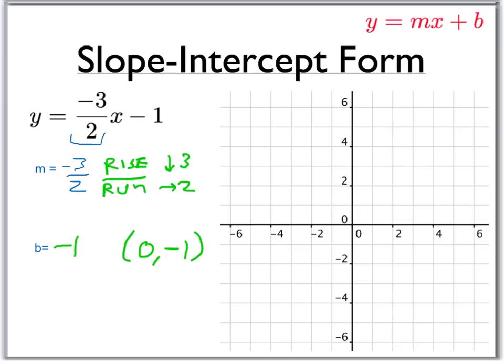Now all that's left to do is first plot the point. Again, our point is 0, negative 1. So 0 and negative 1 is right about there.